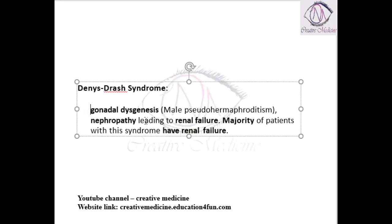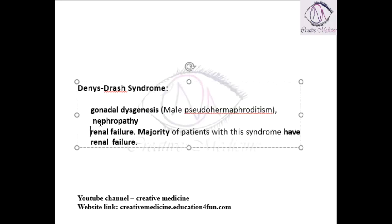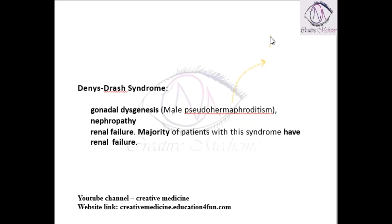Gonadal dysgenesis is associated with male pseudo-hermaphroditism. An example of male pseudo-hermaphroditism is androgen insensitivity syndrome.